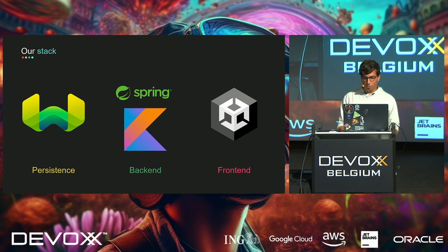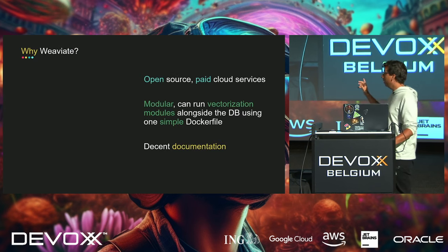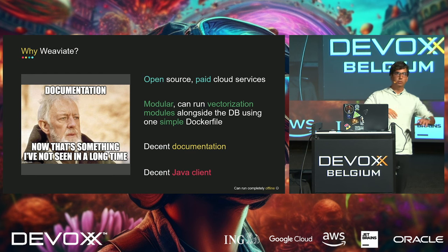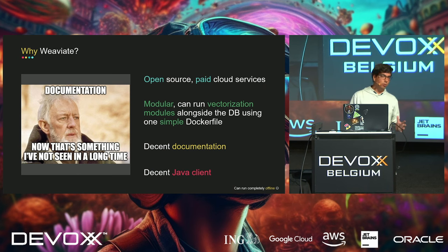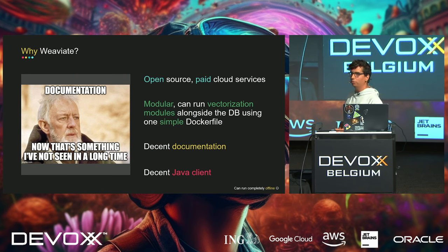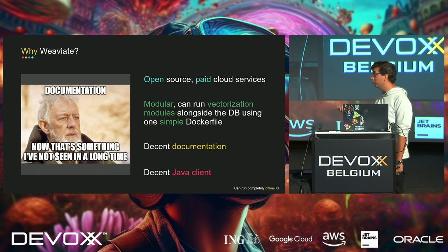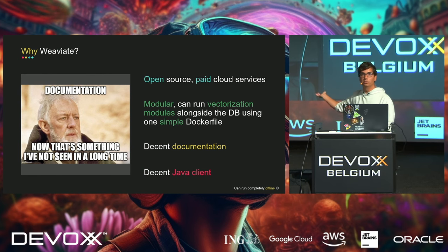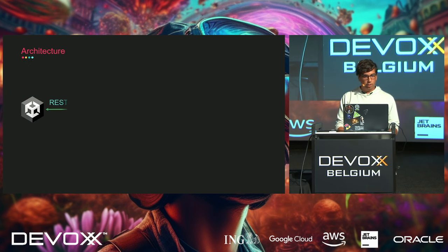Weaviate is completely open source, which is amazing. It's modular — through one Docker file I could spin up different embedding modules and test things out. The documentation is actually pretty decent, and the Java client is reasonable though it lacks some features. Most importantly, you can run it completely offline, which is a must to avoid angering the demo gods during a presentation.